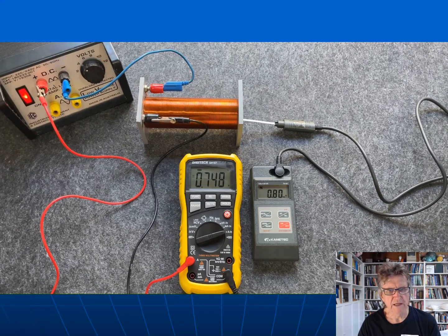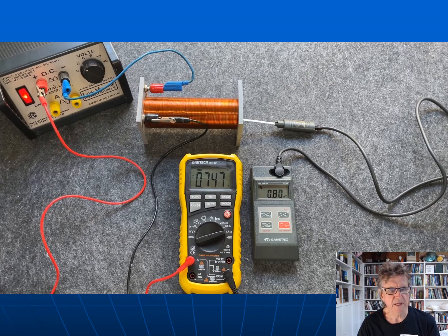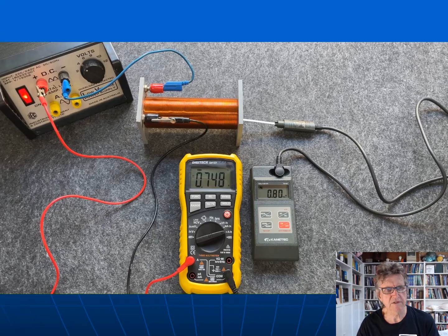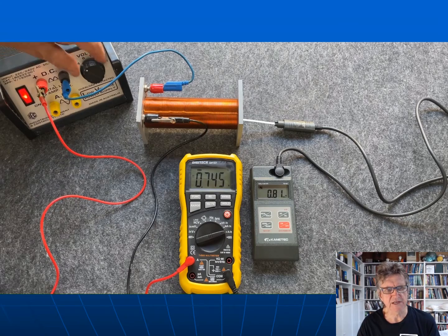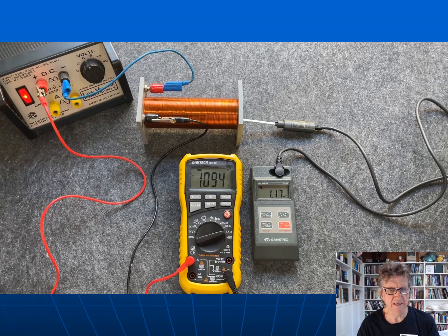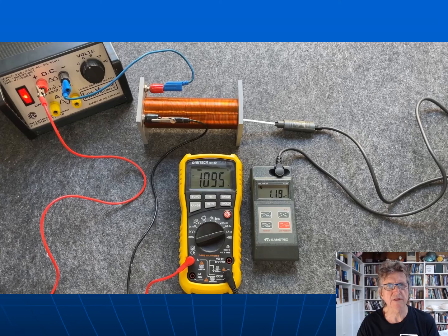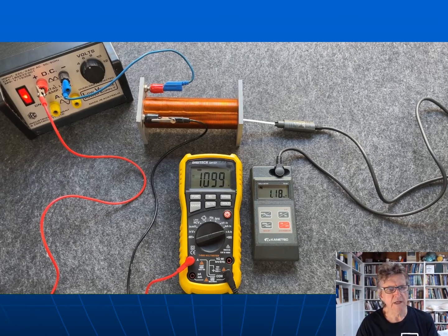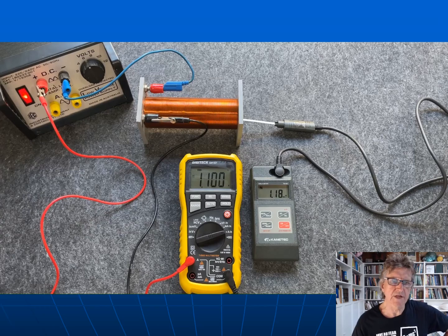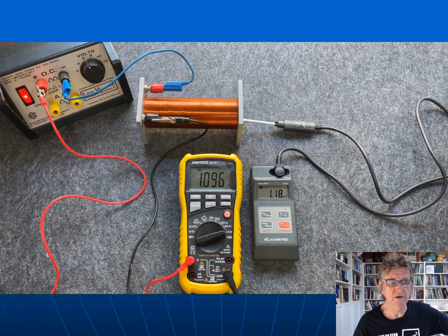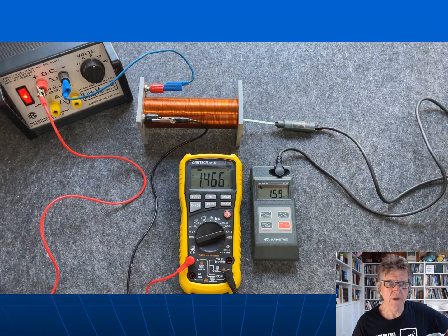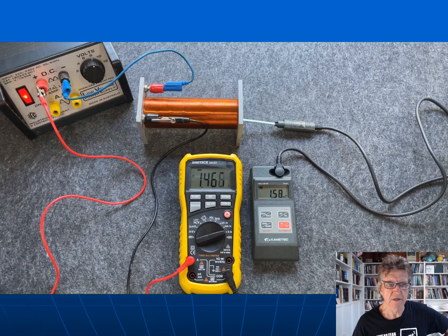Now I've turned it up to four volts. I'm getting a reading of 0.747 and a reading for the field strength in milli Tesla. If you want to, you can take these readings down and plot this yourself. There it is at eight volts, 1.4 amps going through it.